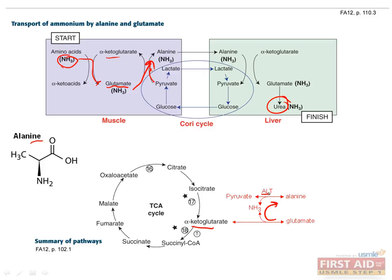Alanine can then circulate through the blood, and then enter the liver. Here, the previous reaction is reversed, and the amine group is transferred from alanine to alpha-ketoglutarate to form glutamate. In the final step, the ammonium from glutamate enters the urea cycle and is used to make urea. This also allows glutamate to cycle back and form alpha-ketoglutarate.